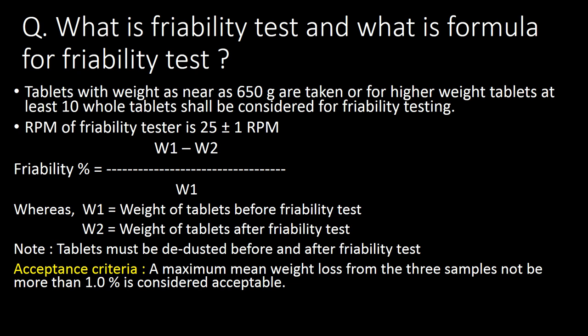What is friability test and what is the formula? For performing the friability test, tablets with weight as near as 6.5 grams are taken, or for higher-weight tablets, at least 10 whole tablets are considered. These tablets are kept in the drum of a friability tester at 25 ±1 rpm. After completion of the rotations, percent friability is calculated with the formula: (W1 − W2) / W1 × 100, where W1 is weight before and W2 is weight after the friability test.